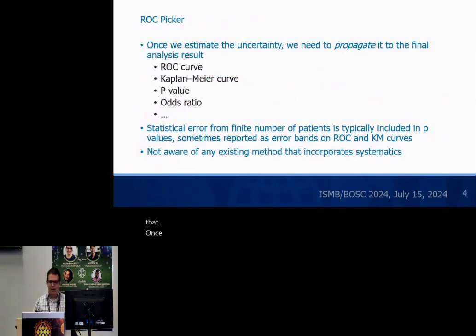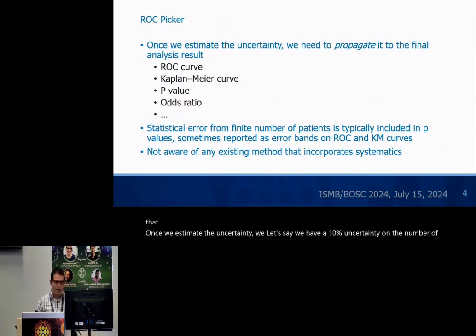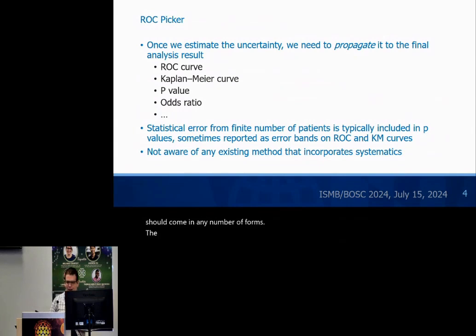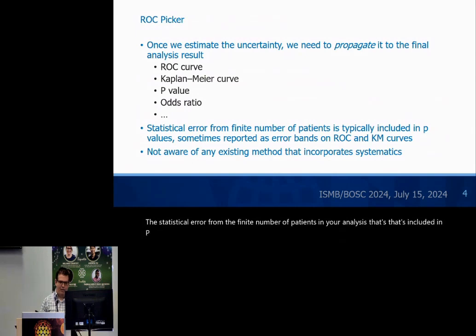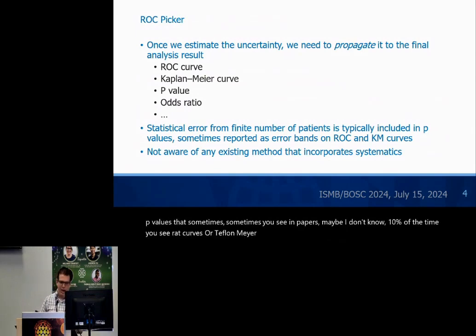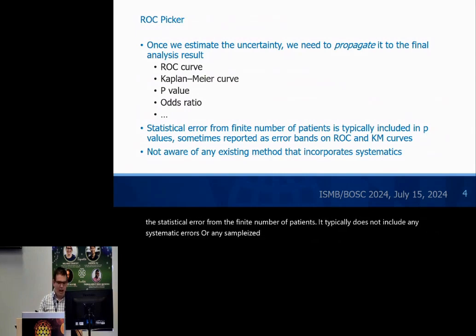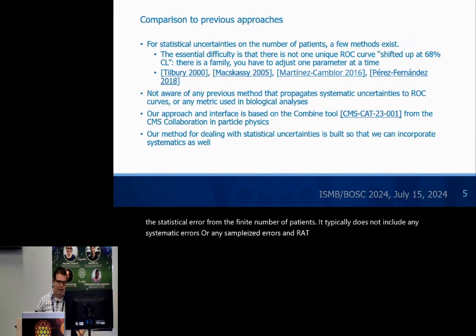Once we estimate the uncertainty — let's say we have a 10% uncertainty on the number of cells of a certain type — we want to propagate it through to the final analysis results, which can come in any number of forms. The statistical error from the finite number of patients is sometimes included in p-values, or you see ROC curves or Kaplan-Meier curves with error bands on them. That includes statistical error from the finite number of patients, but typically does not include any systematic errors or sample-wise errors. RackPicker is a tool to address that.